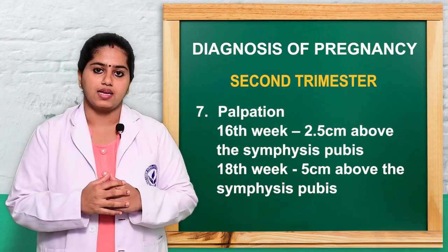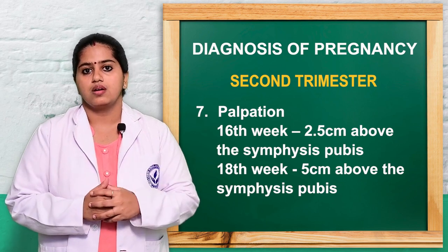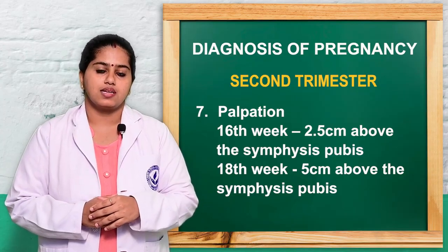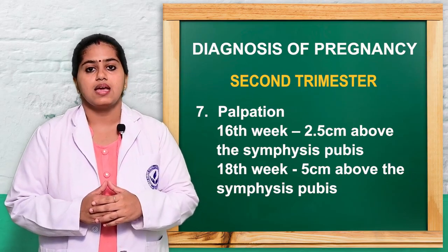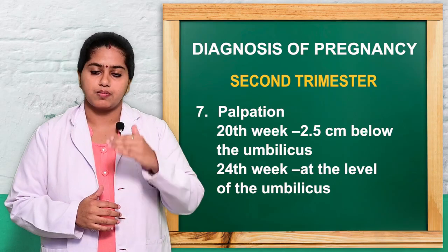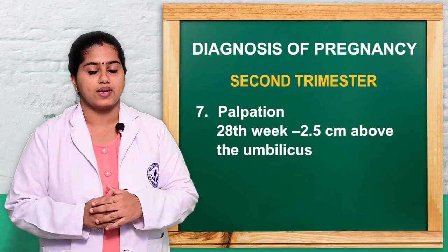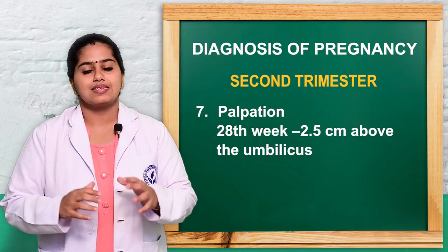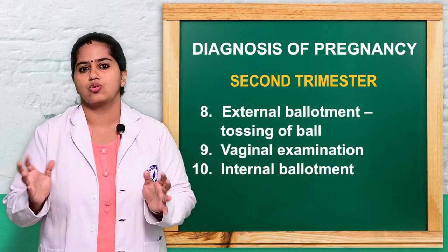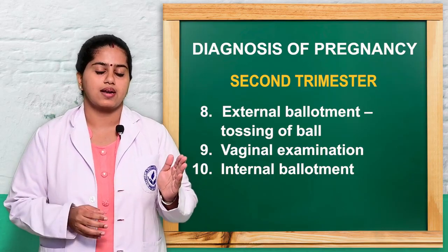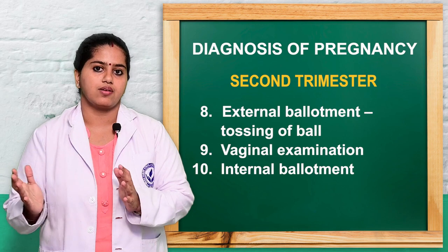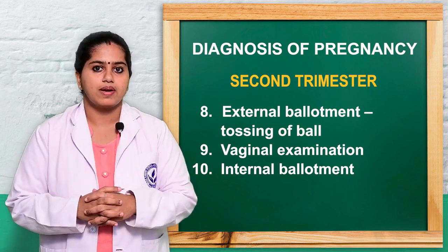Fundal height palpation can identify fetal growth. At 12 weeks it is at the symphysis pubis, at 16 weeks 2.5 cm above the symphysis pubis, at 18 weeks 5 cm above the symphysis pubis, at 20 weeks 2.5 cm below the umbilicus, at 24 weeks at the level of the umbilicus, and at 28 weeks 2.5 cm above the umbilicus. External ballotment can also be identified — if adequate amniotic fluid is present, one hand is placed on one side of the uterus to push the fetus, and the fetus will move and touch the other hand of the observer.